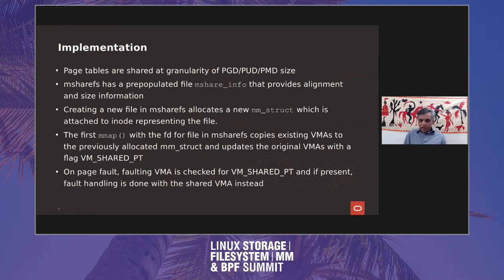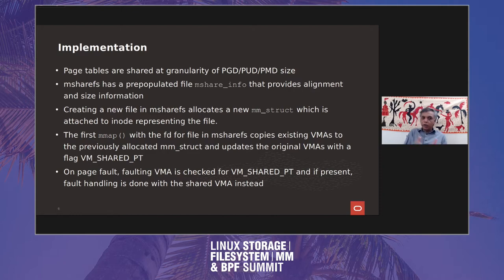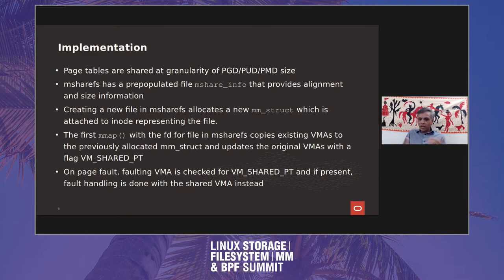I have started with an initial implementation where the focus is on getting the core functionality working, then expanding as needed. One question is the minimum size of the region you want to share — it started out with a page upper-directory size, which is fairly large but keeps things simple for now. We can potentially look at sharing at PUD or PMD sizes as well. A process that wants to map the M-Share region has to know the size and alignment requirement. So when you mount M-ShareFS, it will populate a file called M-Share-info that provides that information — you just open it, read it, and you have the size and alignment requirement.